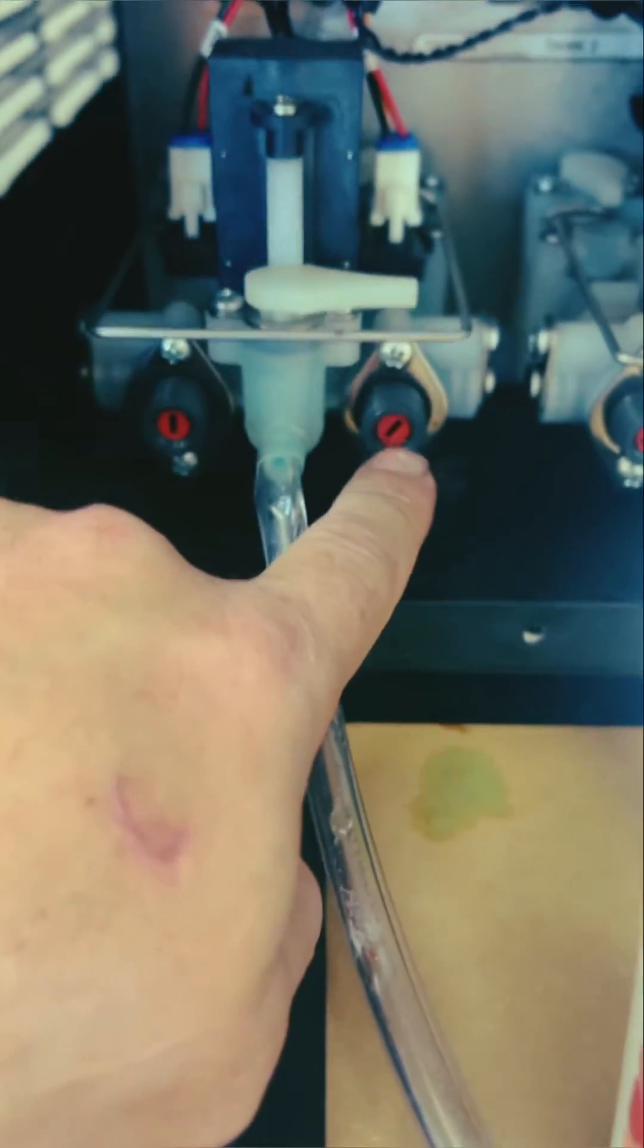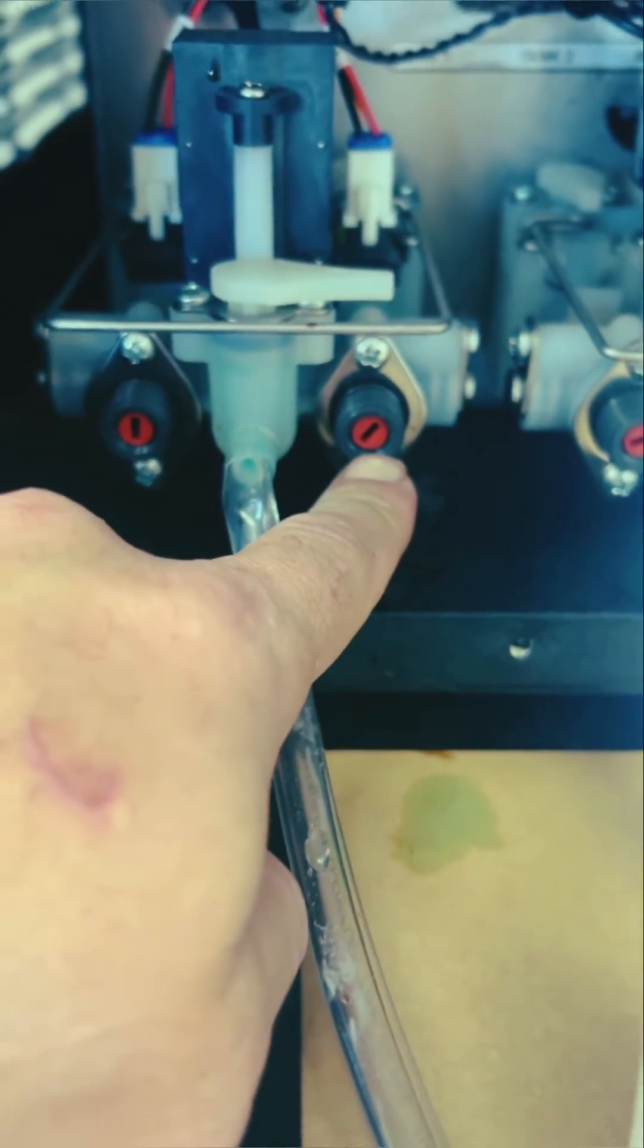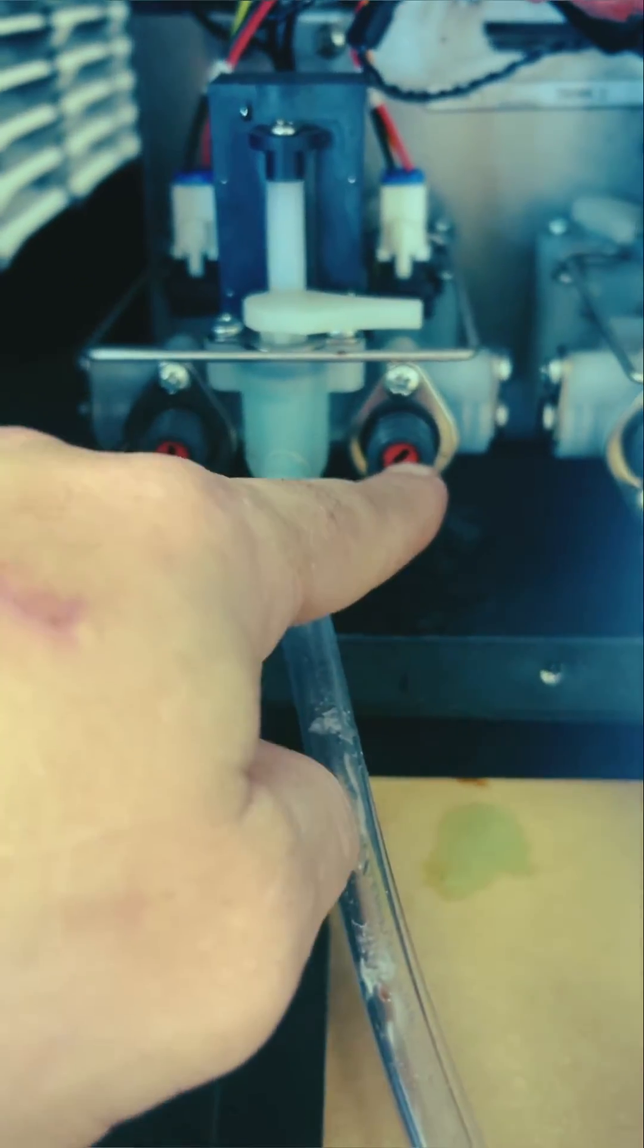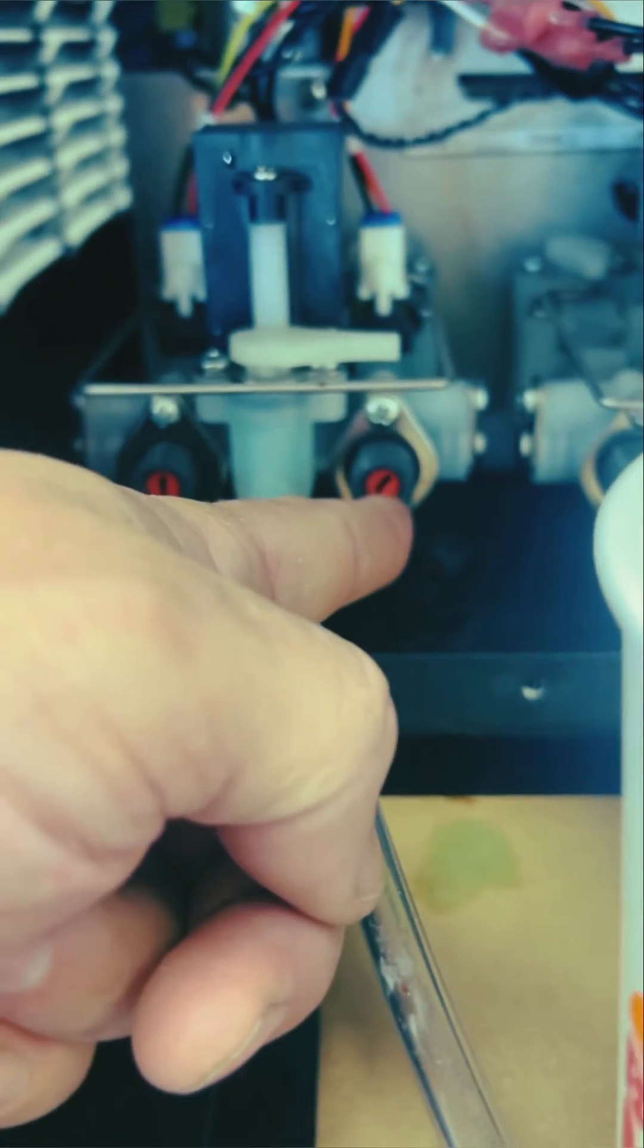When we do our calibration, we're gonna move the syrup adjustment. You turn it in for more syrup and out for less syrup.